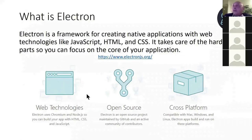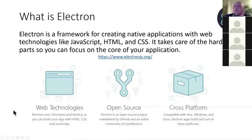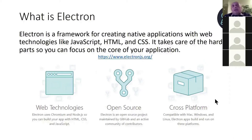Electron takes care of the hard parts so you can focus on the core of your application. This was taken from electronjs.org. The idea is you can use web technologies to build a desktop app, and that desktop app would be cross-platform — the whole project is open source. We're going to build a web application and turn it into a desktop application. One way of doing that is using Electron, though there are other ways like progressive web apps.